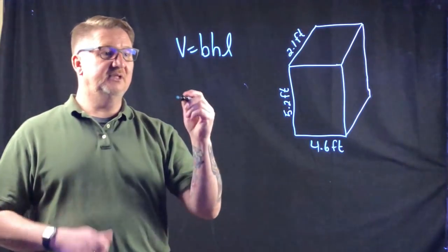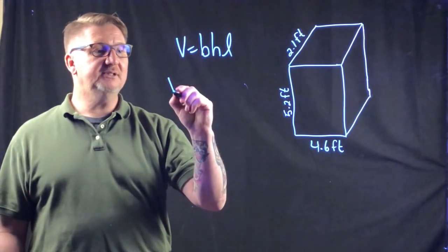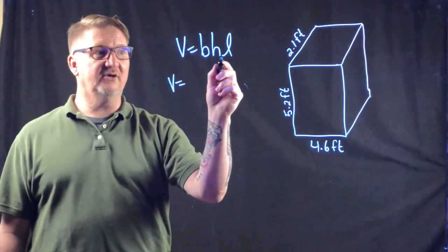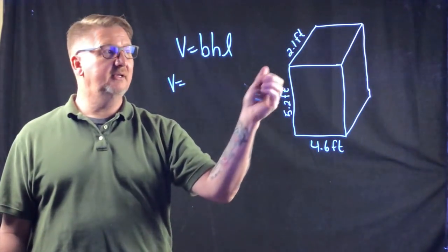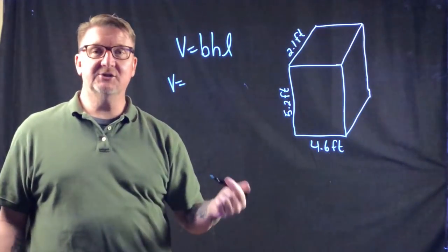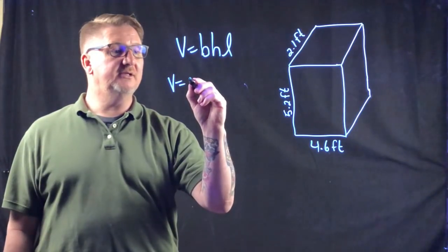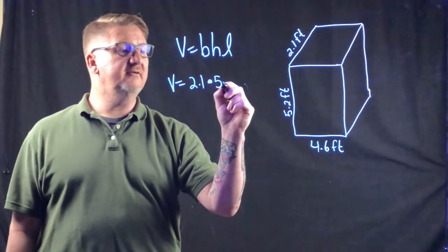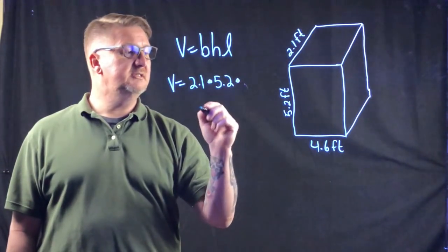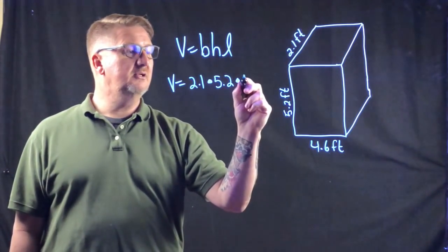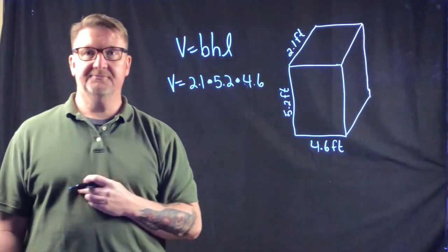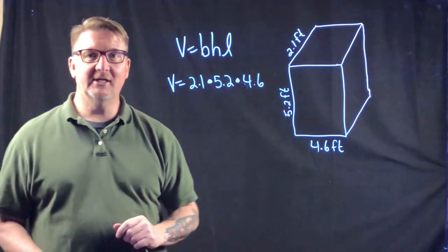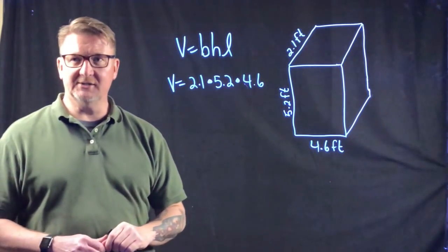We just plug in the numbers. It doesn't matter the order because multiplication is commutative — variables next to each other mean to multiply. So we write 2.1 times 5.2 times 4.6, and we can multiply them in any order we want.